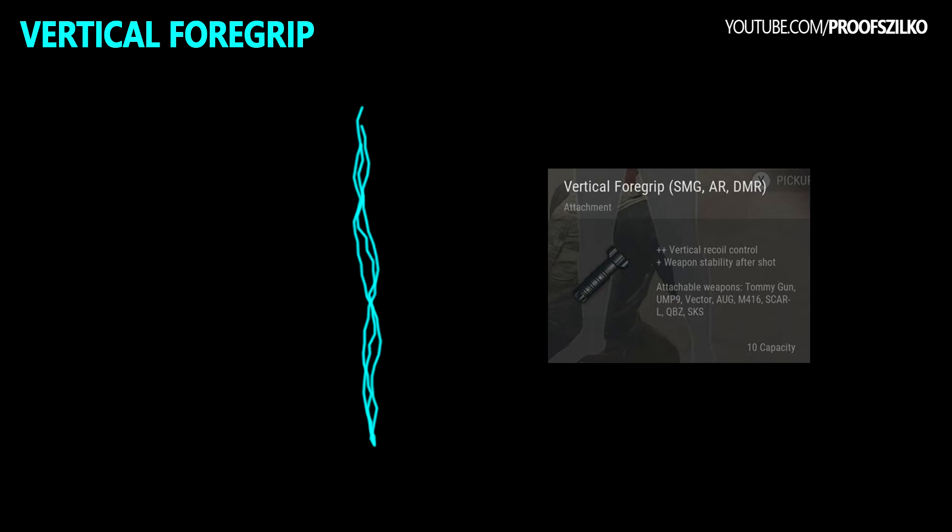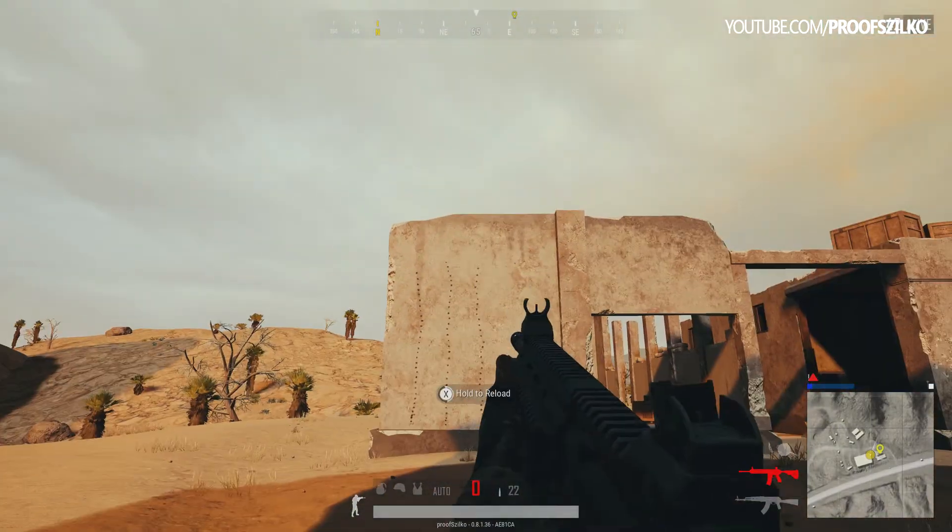So after aligning the patterns, it's clear that the vertical foregrip basically does its job and additionally there's only just a minor horizontal recoil. It has a plus plus on vertical recoil control, plus for weapon stability after shot, and attachable to Tommy gun, UMP-9, Vector, AKM, M416, SCAR-L, and SKS.